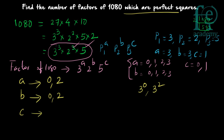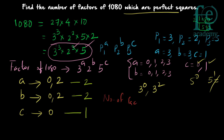What about c? Since c can only be 0 or 1, and 5 raised to 0 is a perfect square but 5 raised to 1 is not a perfect square, c can only take value 0. So now, how many different combinations are possible? A can have 2 values, b can have 2 values, and c can have 1 value. The number of factors which are perfect squares equals 2 into 2 into 1.